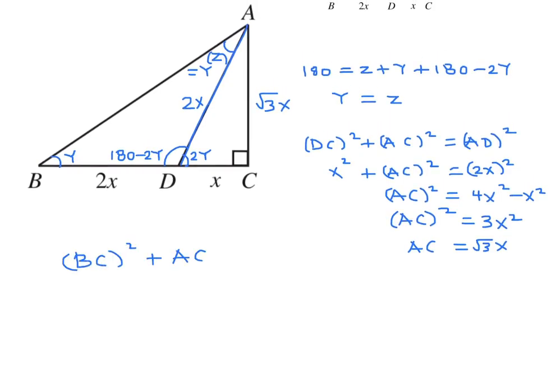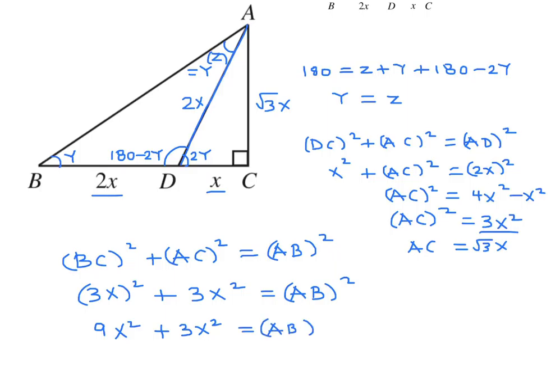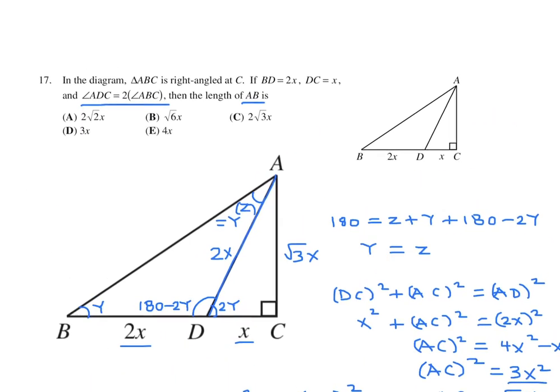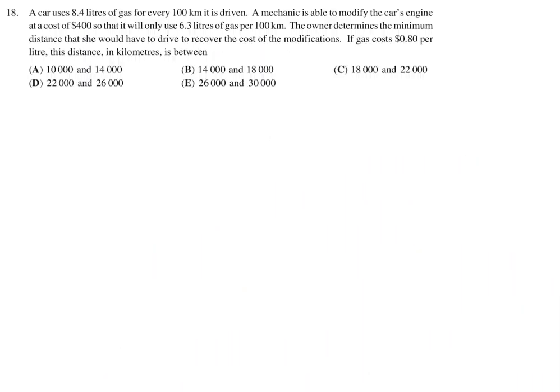And then now finally, they want us to figure out AB. So again, another Pythagorean theorem. But this time, on the entire triangle. So we've got BC squared plus AC squared is equal to AB squared. Like that. BC looks like X and 2X, so that's 3X. 3X squared. AC squared is right here. It's 3X squared is equal to AB squared. 3X squared is 9X squared plus 3X squared is equal to AB all squared. So this looks like 12X squared is equal to AB squared. And therefore, the square root of 12X is AB. And of course, that can be written as 2 root 3X. So 2 root 3X is AB, and therefore 17. The answer is C.